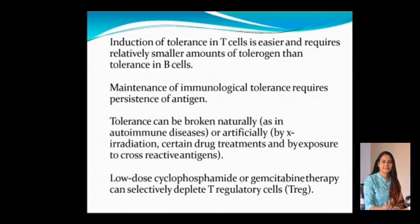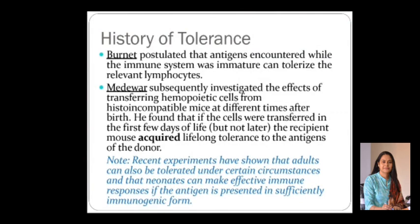Some therapies, like low doses of cyclophosphamide or gemcitabine, can selectively deplete T regulatory cells. Historically, this concept of tolerance has been studied in detail by many. Burnett stated that antigens encountered while the immune system is immature can tolerize the relevant lymphocytes. Similarly, Medawar investigated the effects of transferring hematopoietic cells from histo-incompatible mice at different times after birth. He found that if cells were transferred in the first few days of life but not later, the recipient mouse acquired lifelong tolerance to the antigens of the donor. Recent experiments have shown that adults can also be tolerized under certain circumstances and that neonates can make effective immune responses if the antigen is presented in sufficiently immunogenic form.